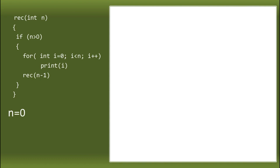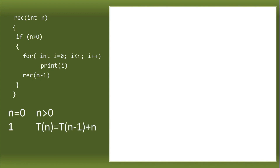Now let's analyze when the value of N is 0. If N equals 0, then 0 greater than 0 is false. When it's false, we can say that if N is 0, the time complexity is 1 — it does nothing, false immediately at the condition. But if N is greater than 0, we use the equation we computed: T of N equals T of N minus 1 plus N.